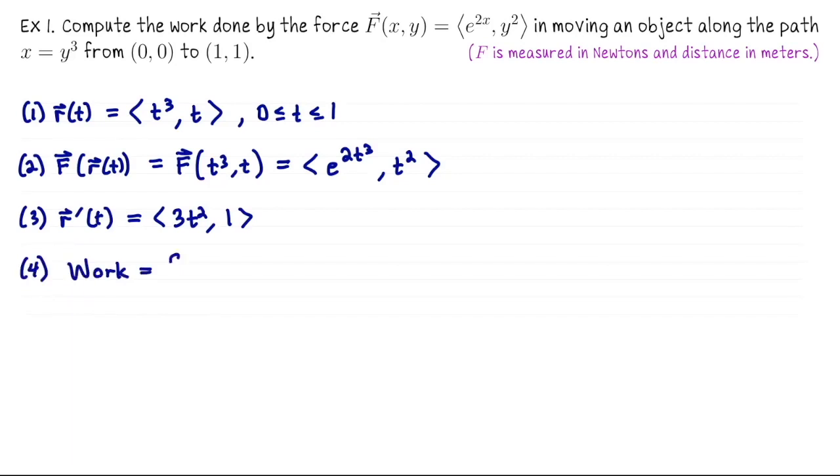The work that's done is this vector line integral along this path, which we're going to compute as the integral from 0 to 1 of what we computed in step 2 dot what we computed in step 3. So the force evaluated along the path dot the velocity vector.